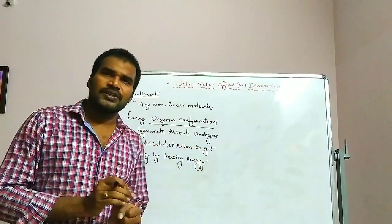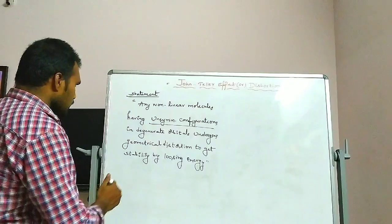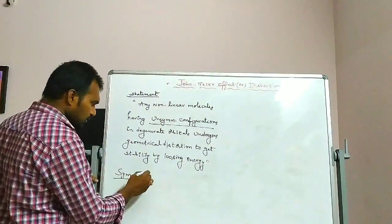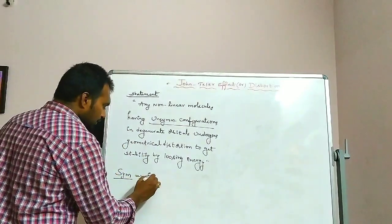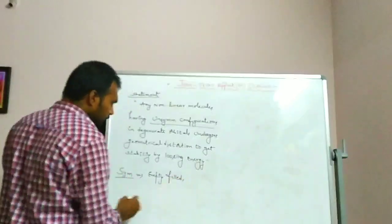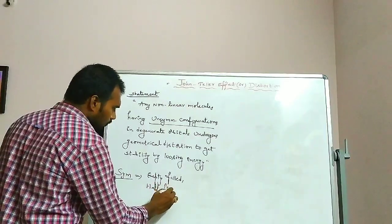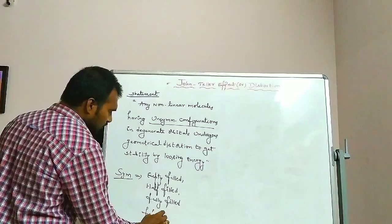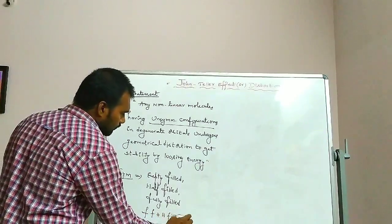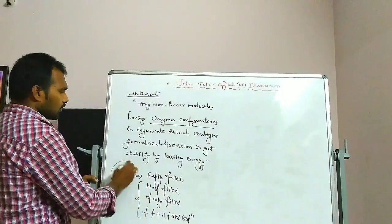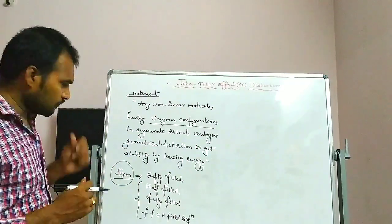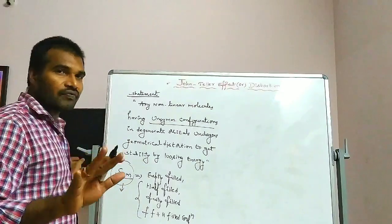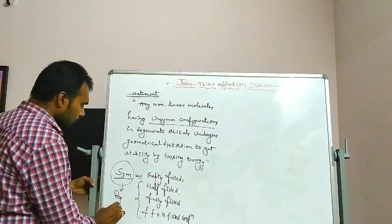What is the difference between symmetrical and unsymmetrical configurations? We call a configuration symmetrical when the central metal ion has empty, half-filled, fully filled, or fully filled plus half-filled orbitals. When a metal ion has a symmetrical configuration, that complex is already stable, so there is no need for any distortion. They have regular geometry.